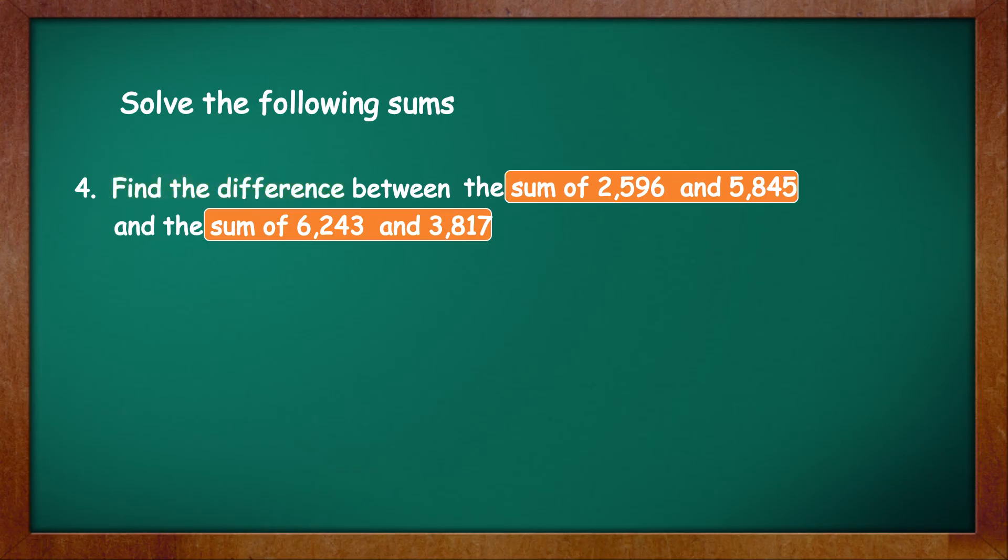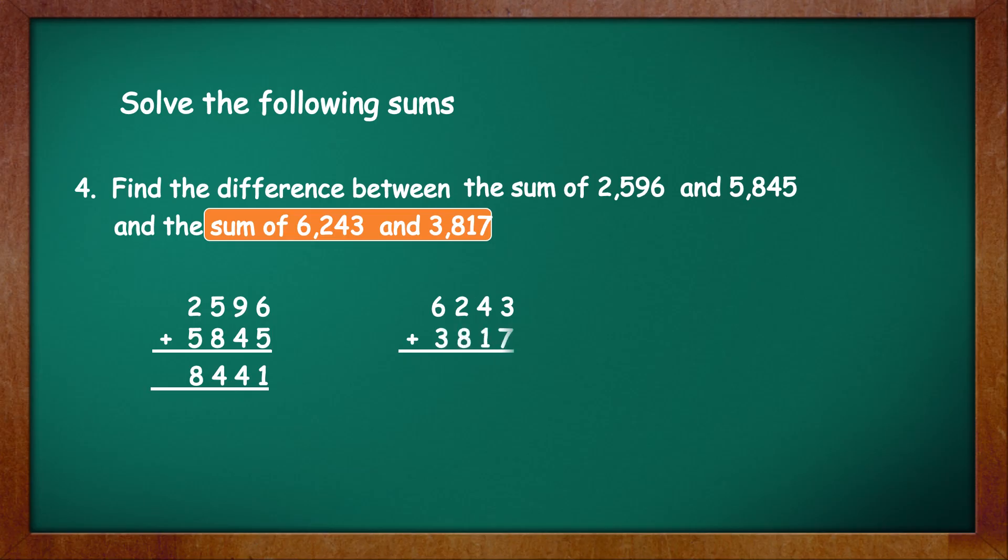This means that you will first add 2,596 and 5,845, which is equal to 8,441. Then, you will add 6,243 and 3,817, which is equal to 10,060. After that, you will find the difference between both the sums.